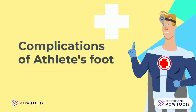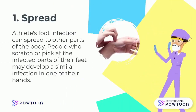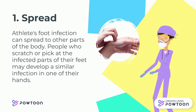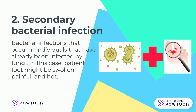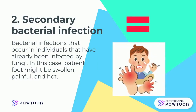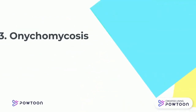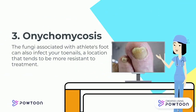Complications of athlete's foot. Spread: Athlete's foot infection can spread to other parts of the body. People who scratch or pick at the infected part of their feet may develop a similar infection in one of their hands. Secondary bacterial infection: This is a type of bacterial infection that occurs in individuals already infected by fungi. In this case, the patient's foot might be swollen, painful, and hot. Onychomycosis: The fungi associated with athlete's foot can also infect the toenails, a location that tends to be more resistant to treatment.